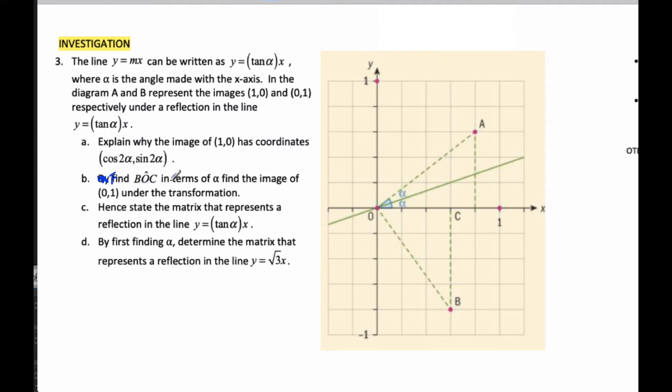Okay, part B says find angle BOC in terms of alpha to find the image of (0,1) under the transformation. So (0,1) reflected over to B. And so if I put a line that connects them, I can clearly see that these are both right angles here, and that this distance is equivalent to this distance. I also know that this is a length of 1 and this is a length of 1. And so this triangle here is congruent to this triangle here because they are all the same sides. If I think about this angle, it's got to be 90 minus 2 alpha. And so this one also has 90 minus 2 alpha plus an alpha, so this is an alpha, so this one is 90 minus 2 alpha. So angle BOC is equal to 90 minus 2 alpha.